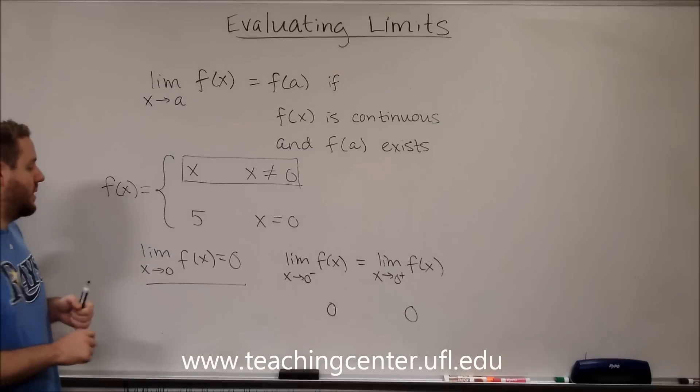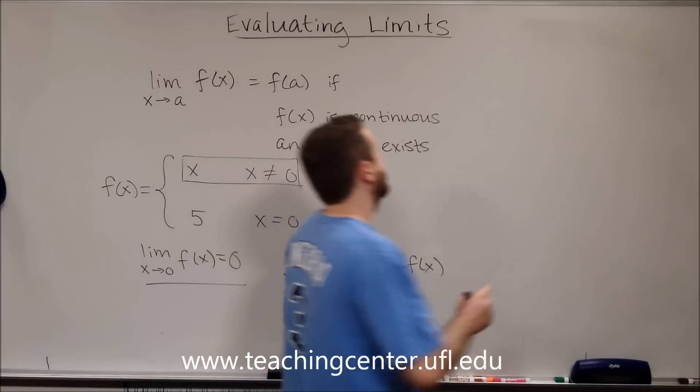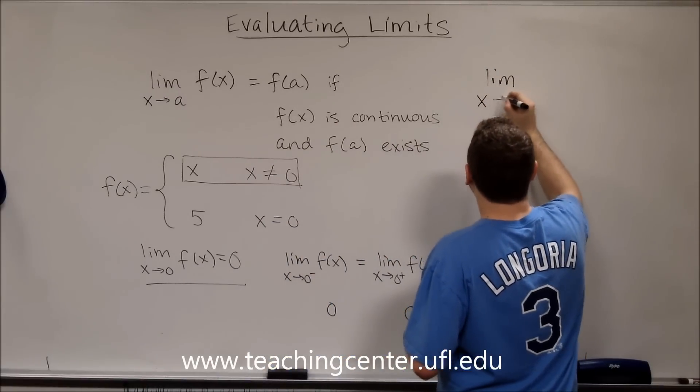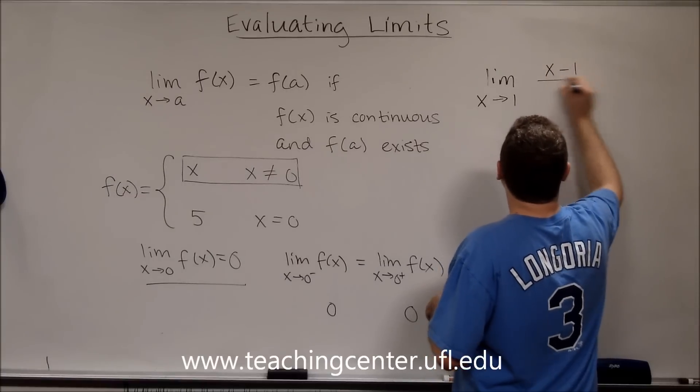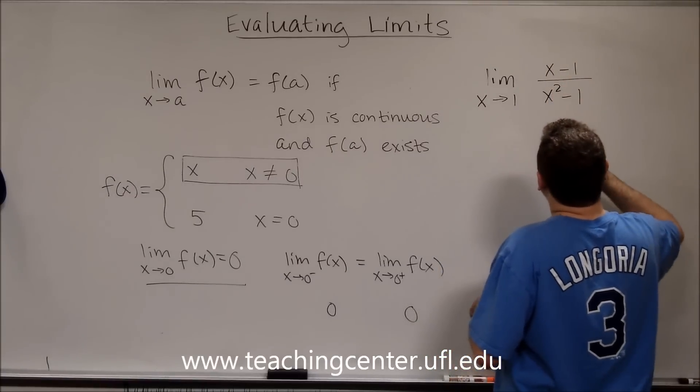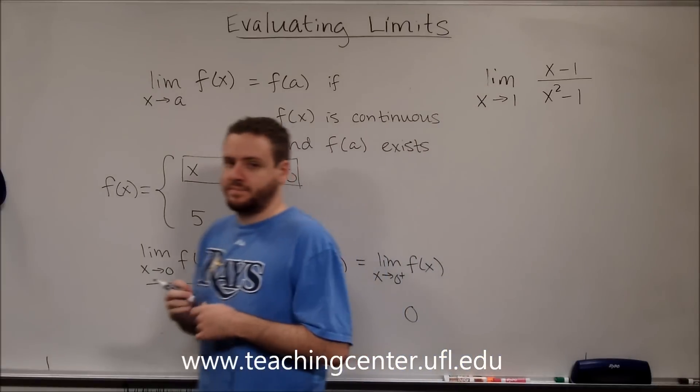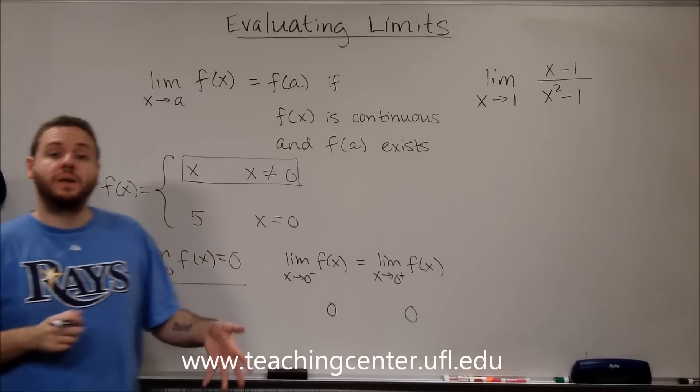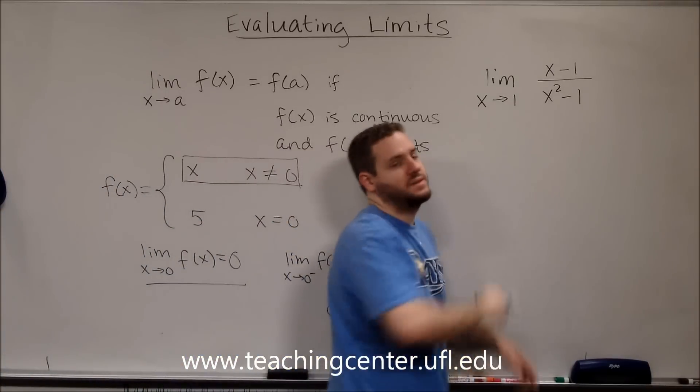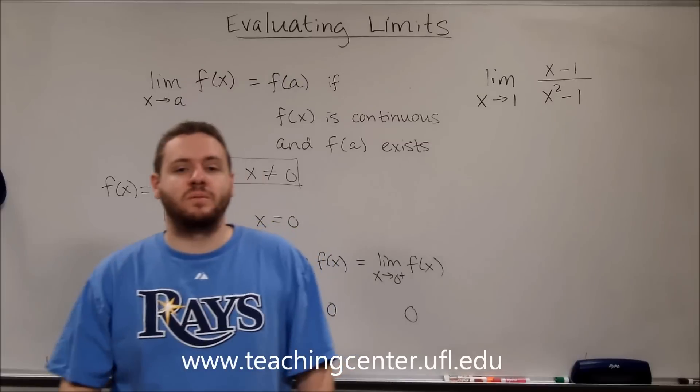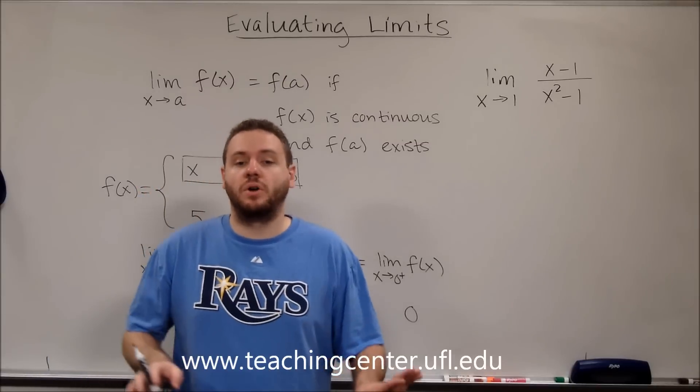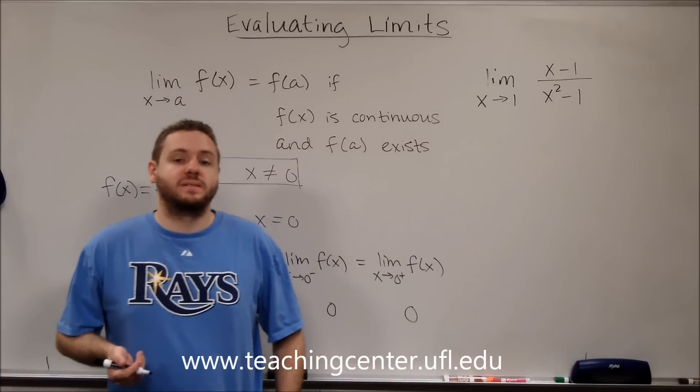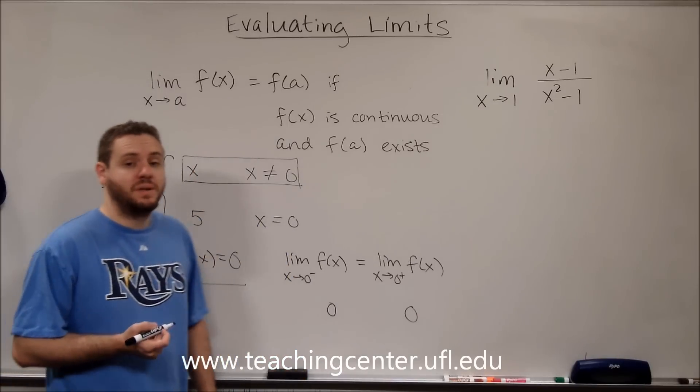So let's talk about what type of indeterminate forms you can get. Let's say we wanted to do the limit as x approaches one of that function there. Let's do what we were talking about here. Let's just try direct substitution. Let's plug in one for x. If you plug in one for x, you get zero over zero. So that is an indeterminate form and that means that you don't know anything about what that limit is. So the only way that you can solve this is to simplify this in some fashion. In this case, this one is pretty easy to simplify.